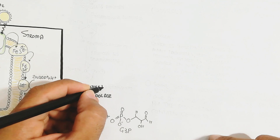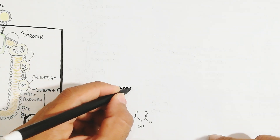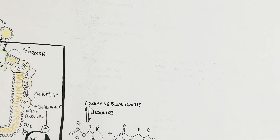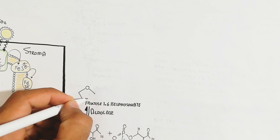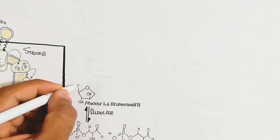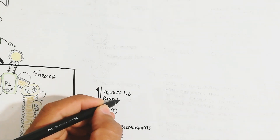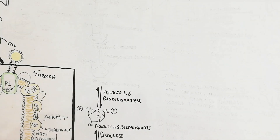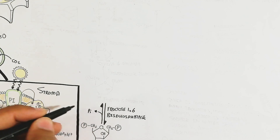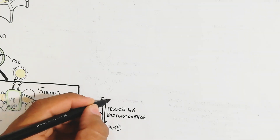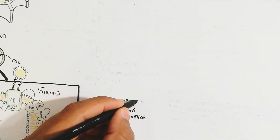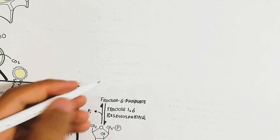Fructose-1,6-bisphosphate contains phosphate groups at carbon numbers one and six. After this, the inorganic phosphate is released in the presence of the fructose-1,6-bisphosphatase enzyme, forming fructose-6-phosphate after releasing one inorganic phosphate.